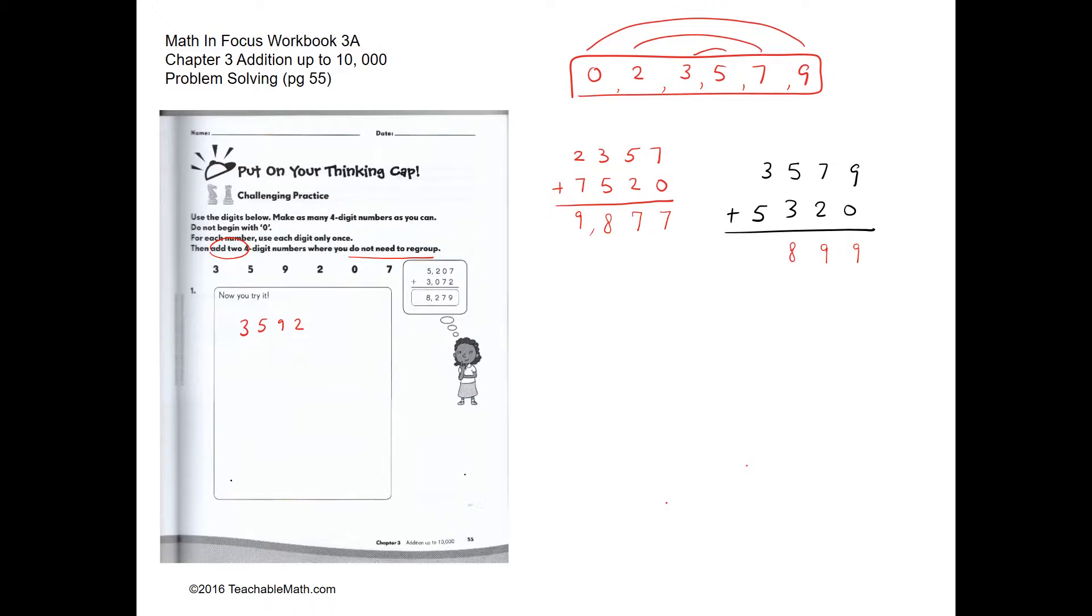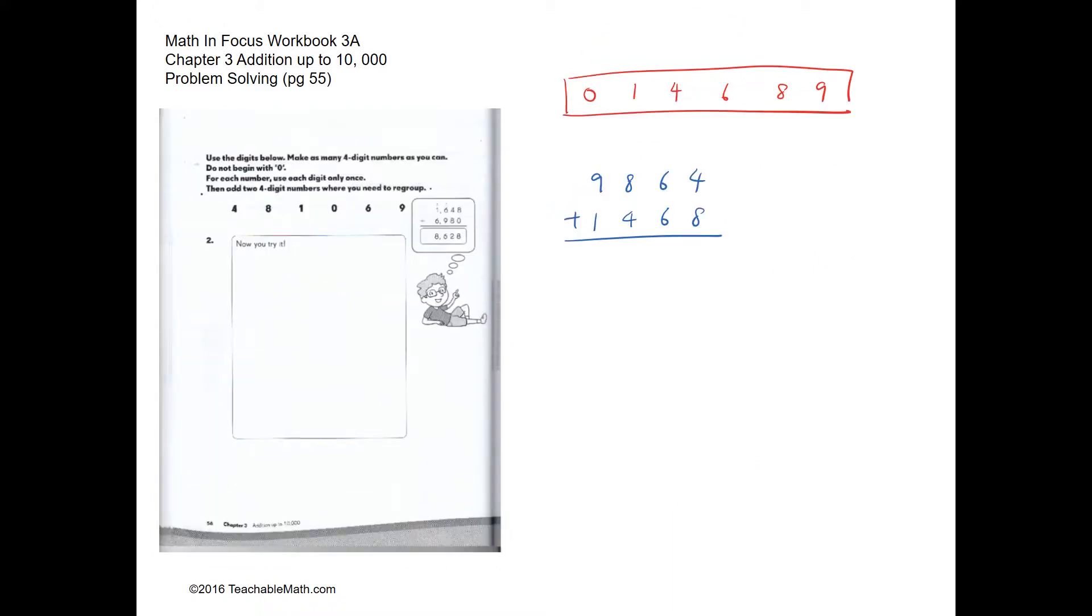For this question, we have to find two four-digit numbers where you need to regroup. In this case, we have to find digits that add to 10 or more. So for the ones: 4 ones and 8 ones gives us 12 ones.